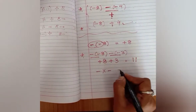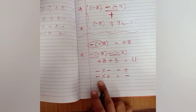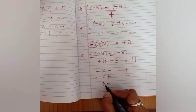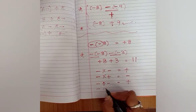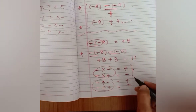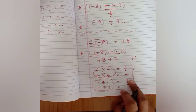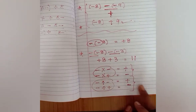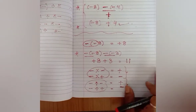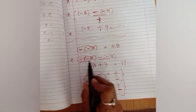Whenever minus into minus comes, it becomes plus. Negative into positive always gives minus. This is the simple rule for multiplication and division both. Minus divided by positive gives a negative answer. For both multiplication and division, the rules are the same. Negative divided by negative becomes positive; negative divided by positive or positive divided by negative gives a negative answer.